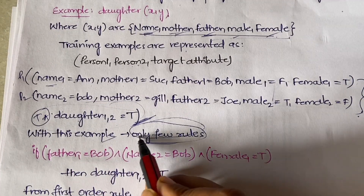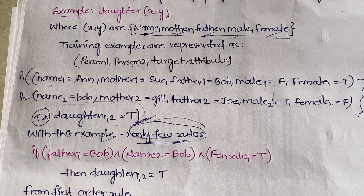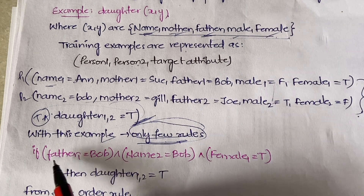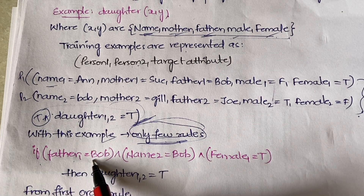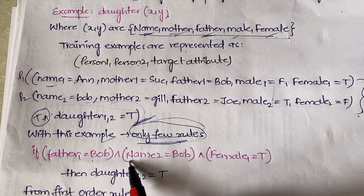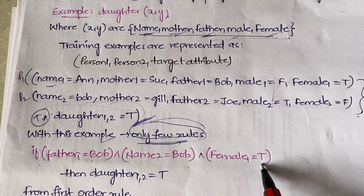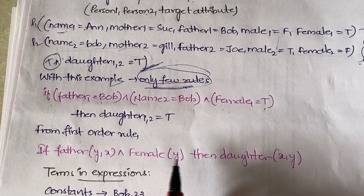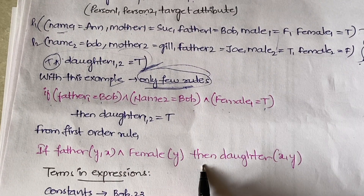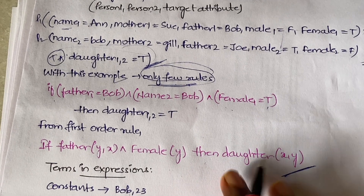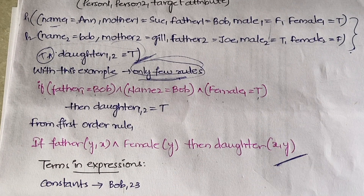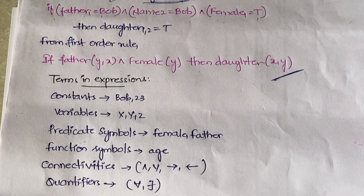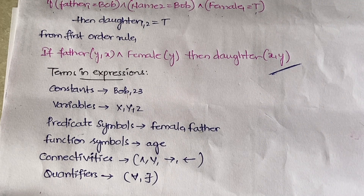Using first order rules, you would represent it as: if father(1)=Bob and name(2)=Bob and female(1)=true. This is how you represent it using first order logic. You might get confused about what father, daughter, Bob, and other terms mean — all of these are terms and expressions used to represent things in first order logic.